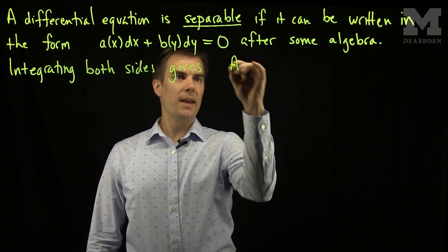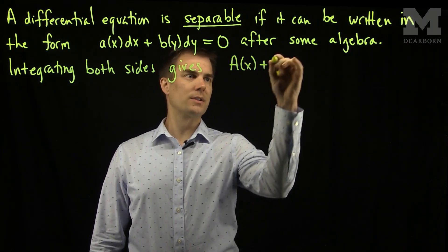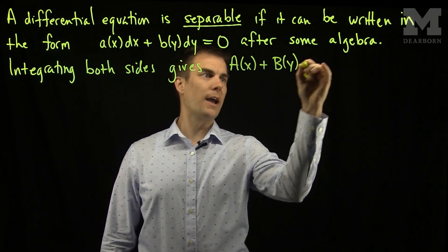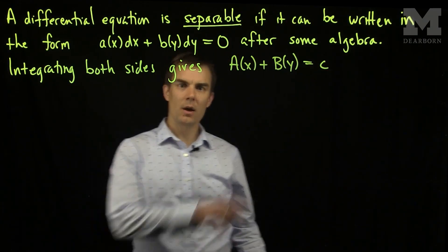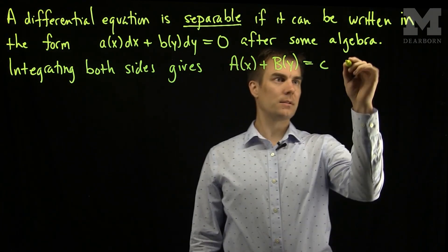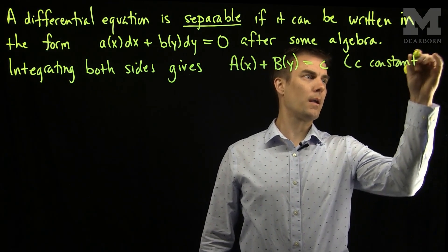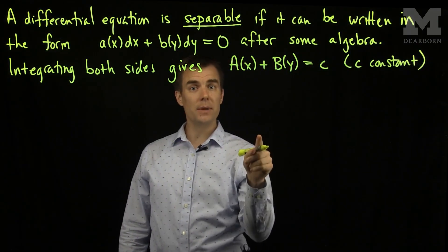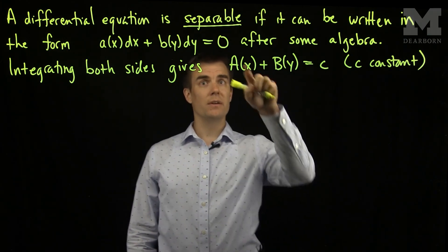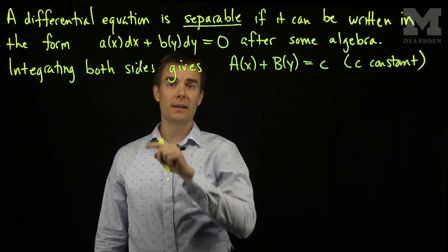A capital of x plus B capital of y equals c, where c is the constant, and A capital and B capital are the anti-derivatives of little a and little b respectively.